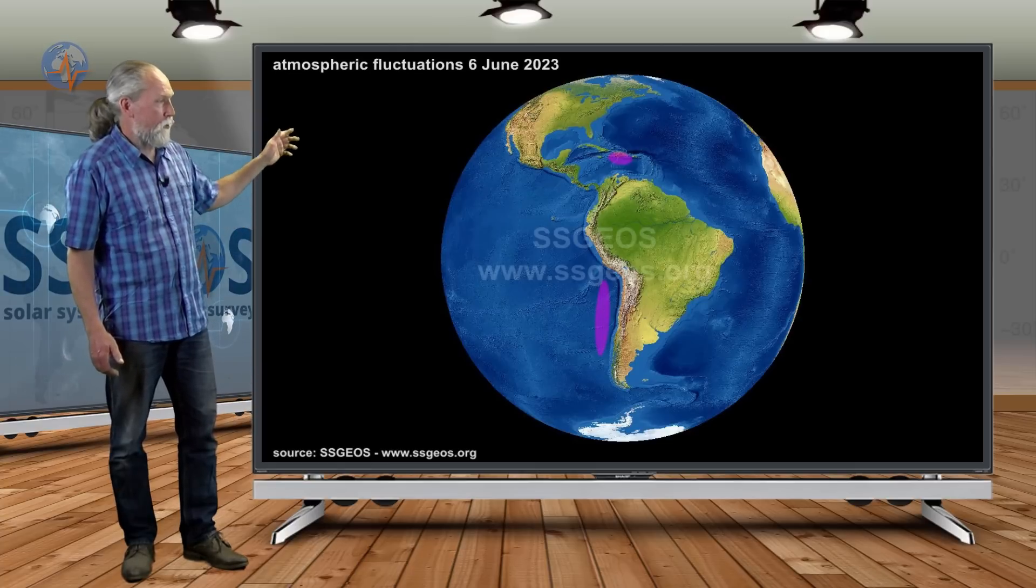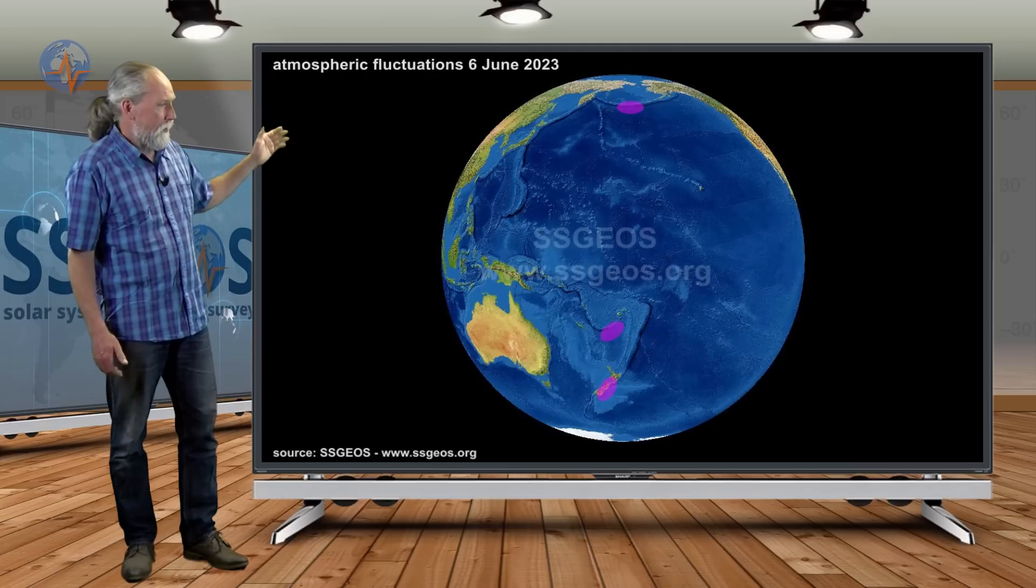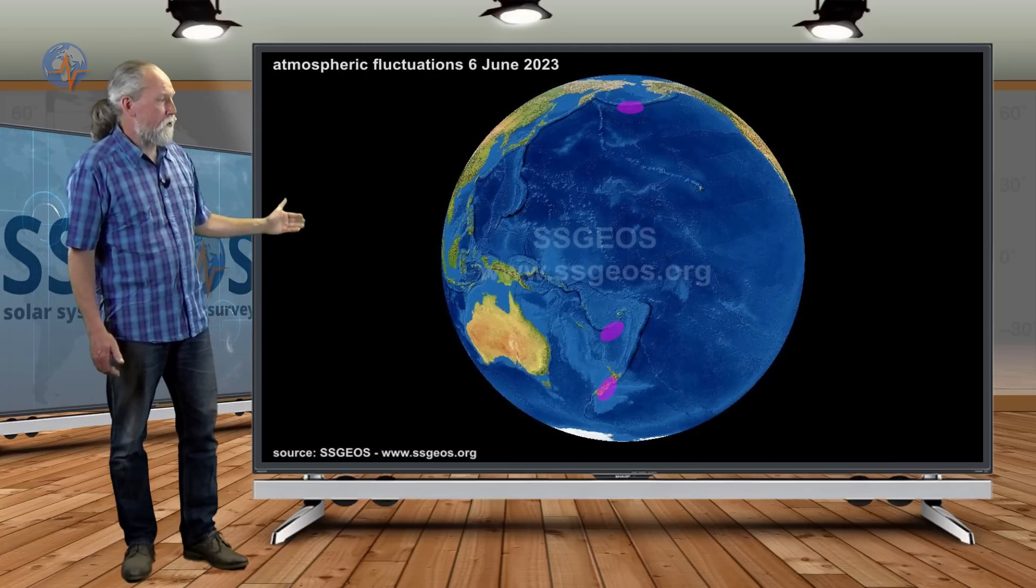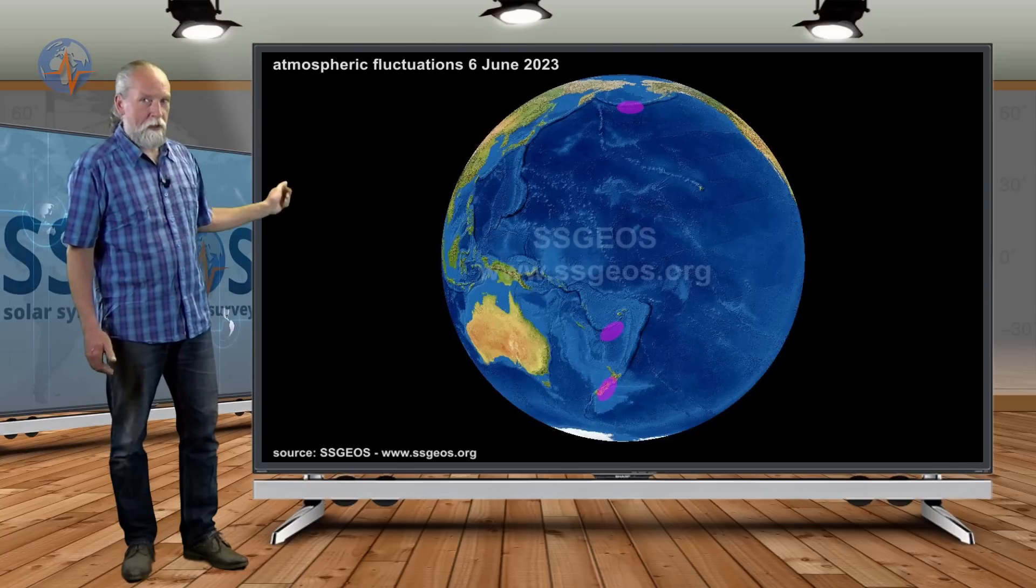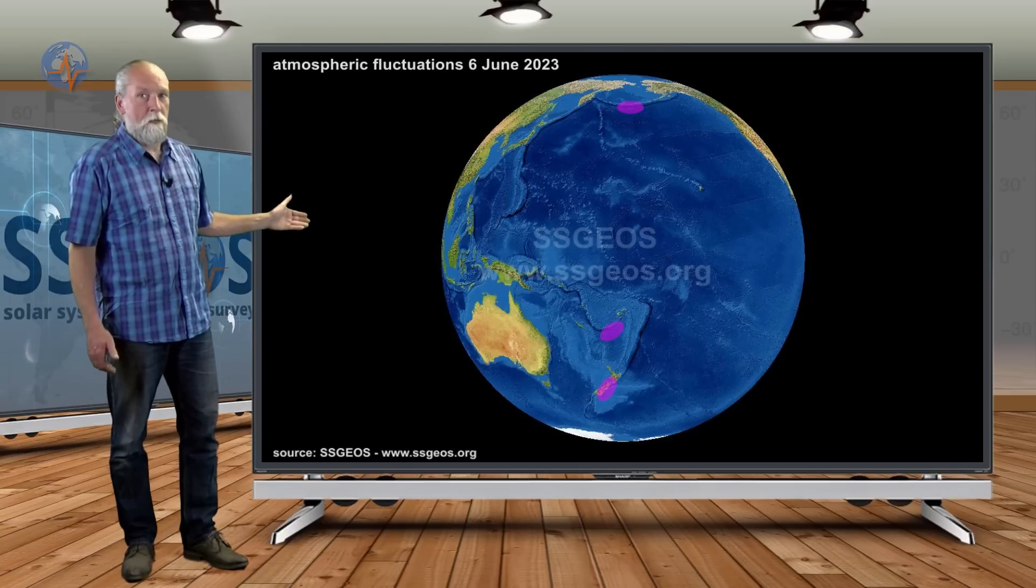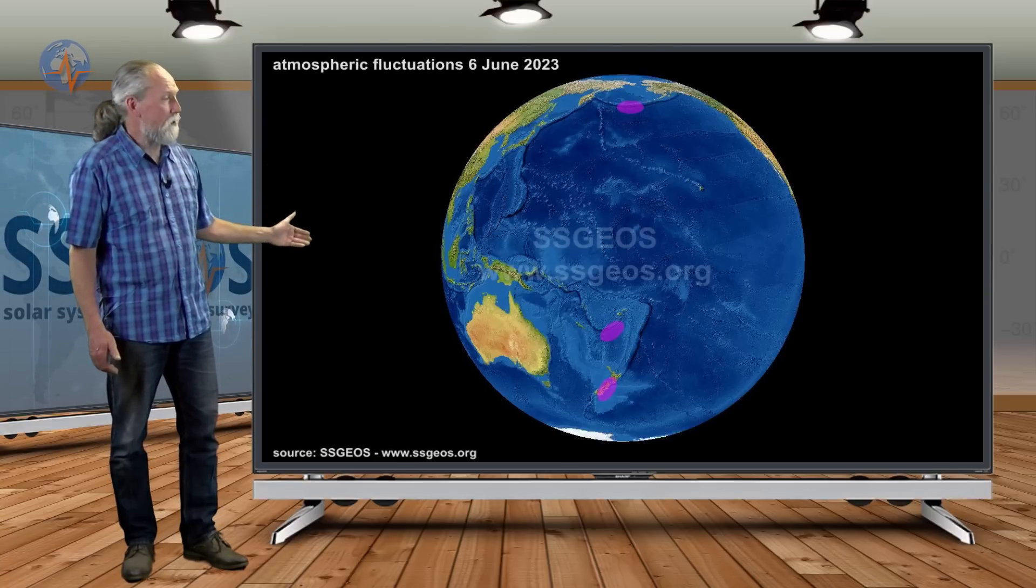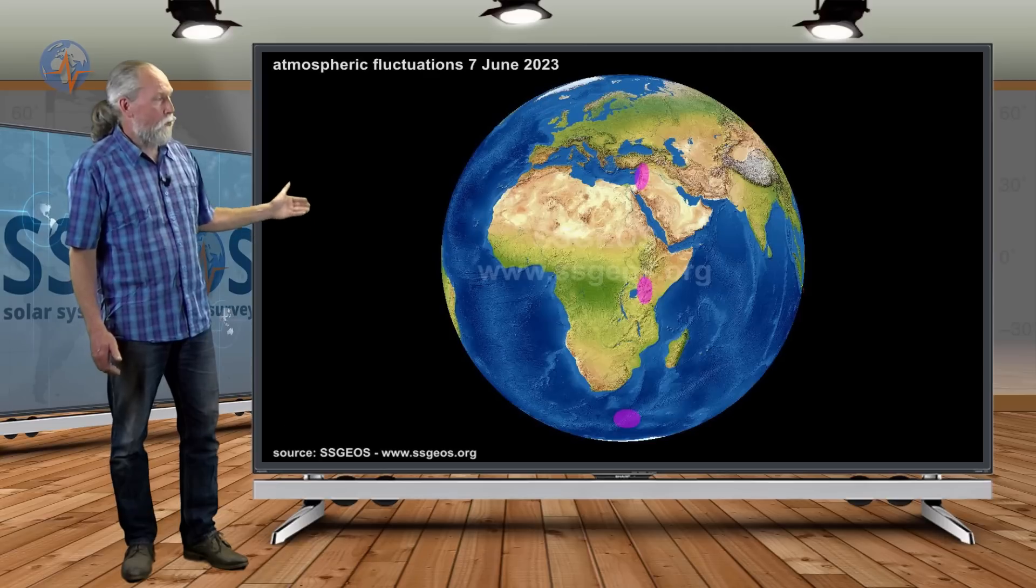And also the Rat Islands, Aleutian Islands. And to the south that is the Loyalty Islands region and New Zealand. There have been some stronger earthquakes. Magnitude 5.7, 5.8 even in these regions. And then also on the 7th.